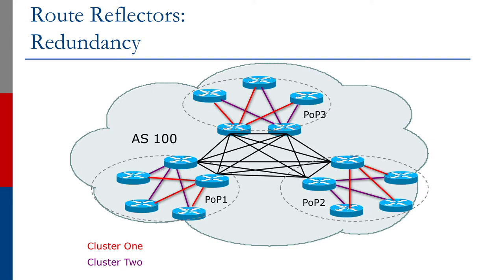Point of presence one has two core routers and three clients — for example, access routers. Cluster one is shown with red connections and cluster two with black connections, representing two overlaid route reflector clusters. With three points of presence in this example, the core routers are the route reflectors and they are fully meshed with each other.